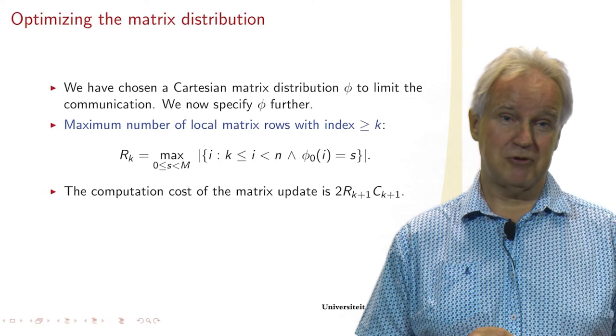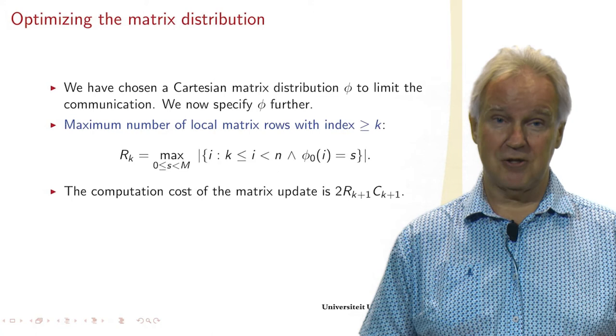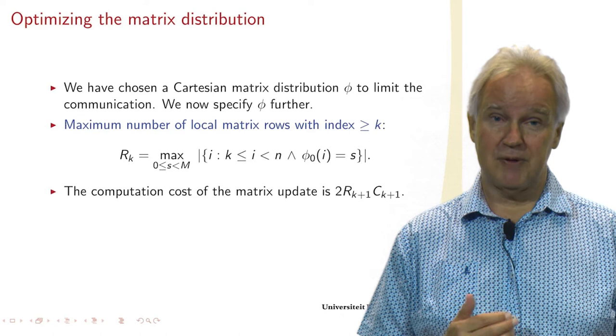And since we have to perform two flops for every matrix element, the computation of this stage K costs 2 times R_{K+1} times C_{K+1}. And we can then reason with this.